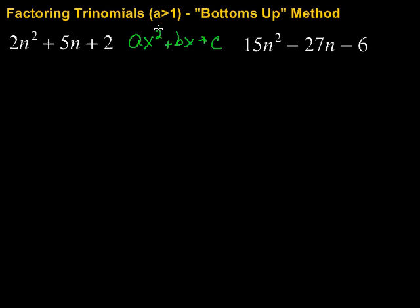That's going to be critical that we know those as we work through this method. The first step is going to be to take A times C. So in this case it's 2 times 2, so that gives us 4. Then we're going to look for factors of 4 that combine to give us 5. Well those factors would be 4 and 1.